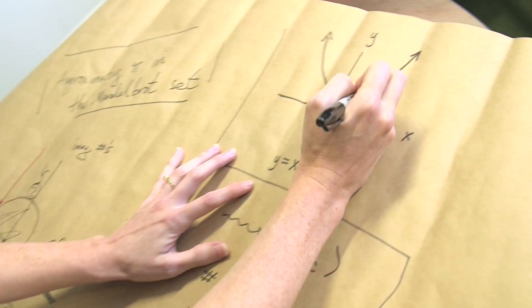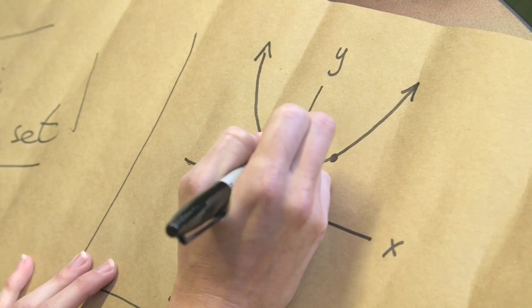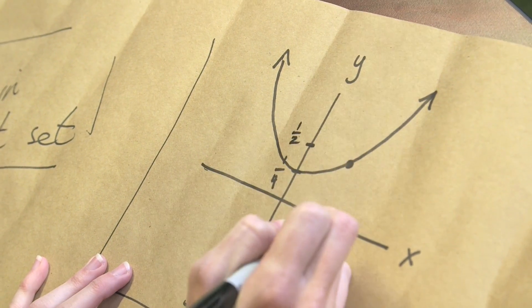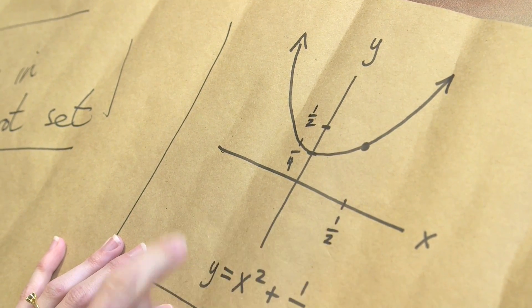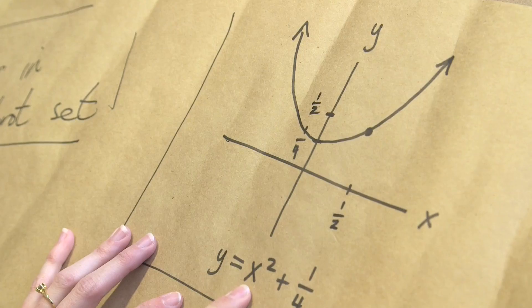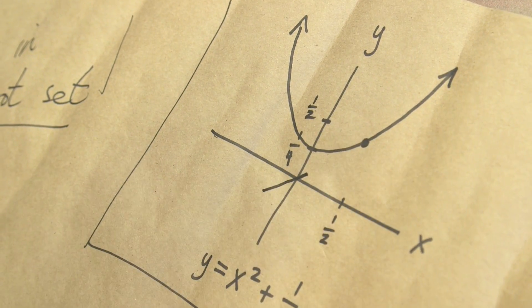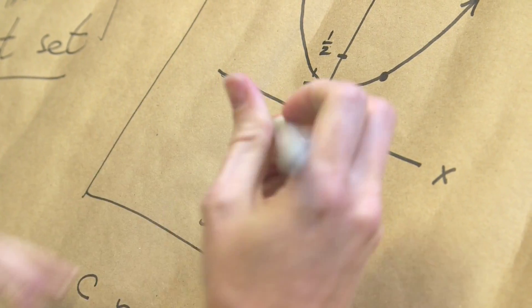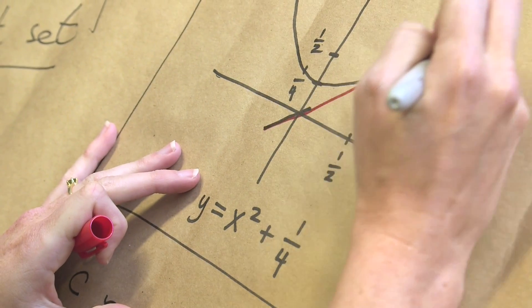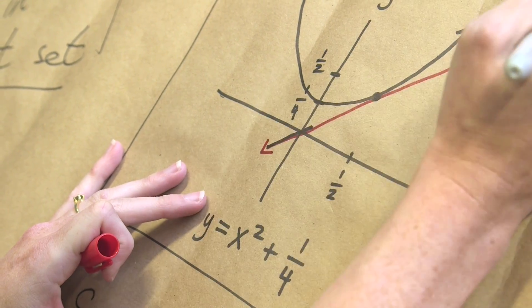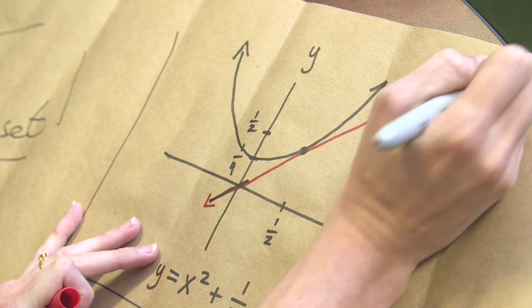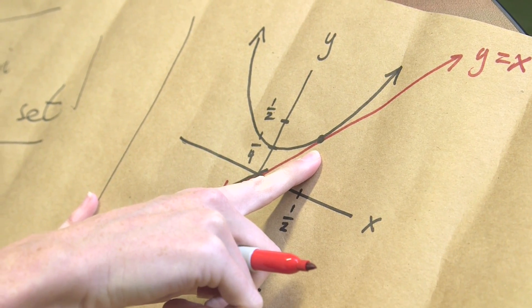And this function actually hits right at the point x equals one-half. So if you plug in one-half to this you get one-fourth plus one-fourth, which is one-half back. Right, so this function hits the line y equals x exactly as a tangent at one-half.